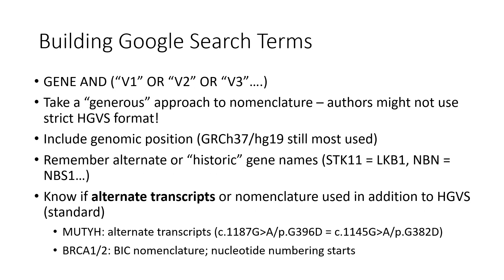When building your search term, you want to include the name of your gene as well as several versions of the variant nomenclature. Using quotation marks and the Boolean operators AND and OR can help make sure your search output is comprehensive but not so extensive that you're spending hours digging through results for a single variant. Quotation marks help you specifically find an exact match for the text within the marks. While we hope publications will stick to defined HGVS nomenclature, sometimes it helps to be a little creative, especially for older publications, and use genomic position as well as variant nomenclature in your search string. If your gene has aliases or historic names, including those may help. You also need to be aware of alternate transcripts or nomenclature that might have been commonly used in addition to HGVS.